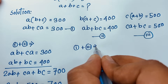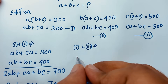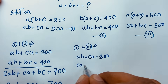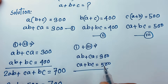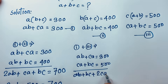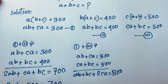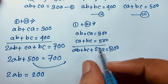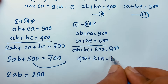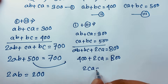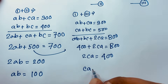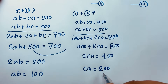Again I add the first equation and the third equation. First: ab + ca = 300, third: ca + bc = 500. Adding gives ab + bc + 2ca = 800. Since ab + bc = 400 from equation 2, we get 2ca = 400, so ca = 200. This is our fifth equation.